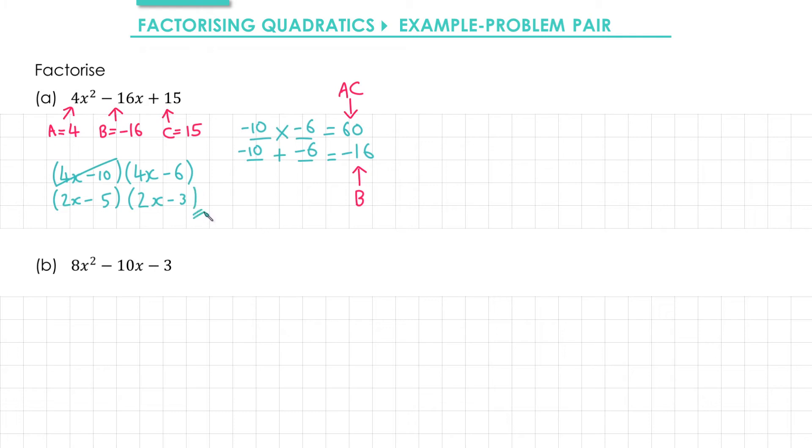And that's our answer. Can you see how at no stage did we have to decide whether it was 2x and 2x, or 1x and 4x? Nor did we have to decide whether it was minus 5 and minus 3, or the other way round. When you use this method, everything just falls into place.